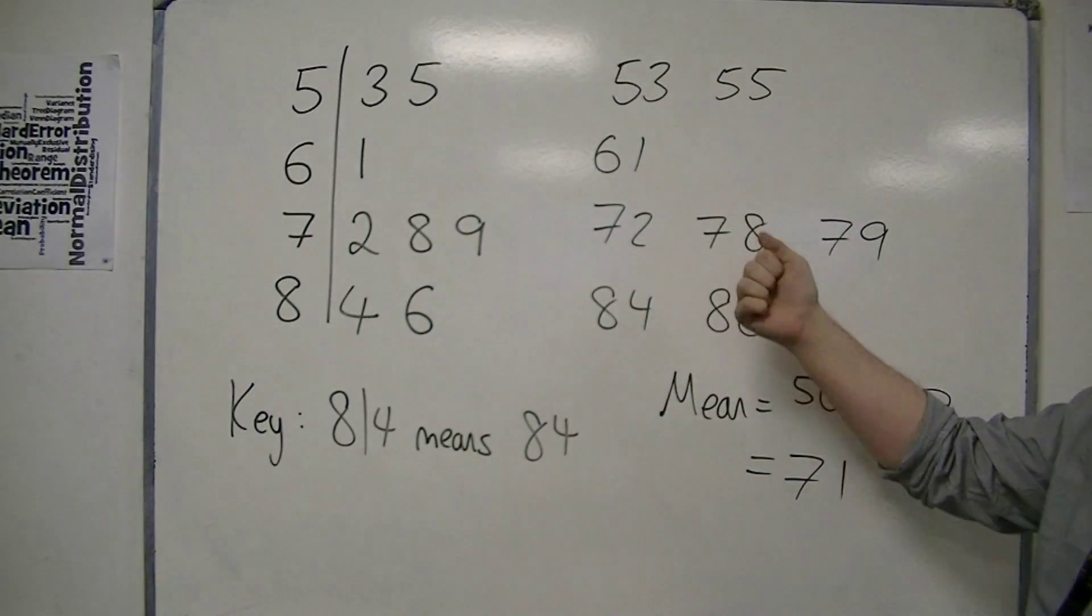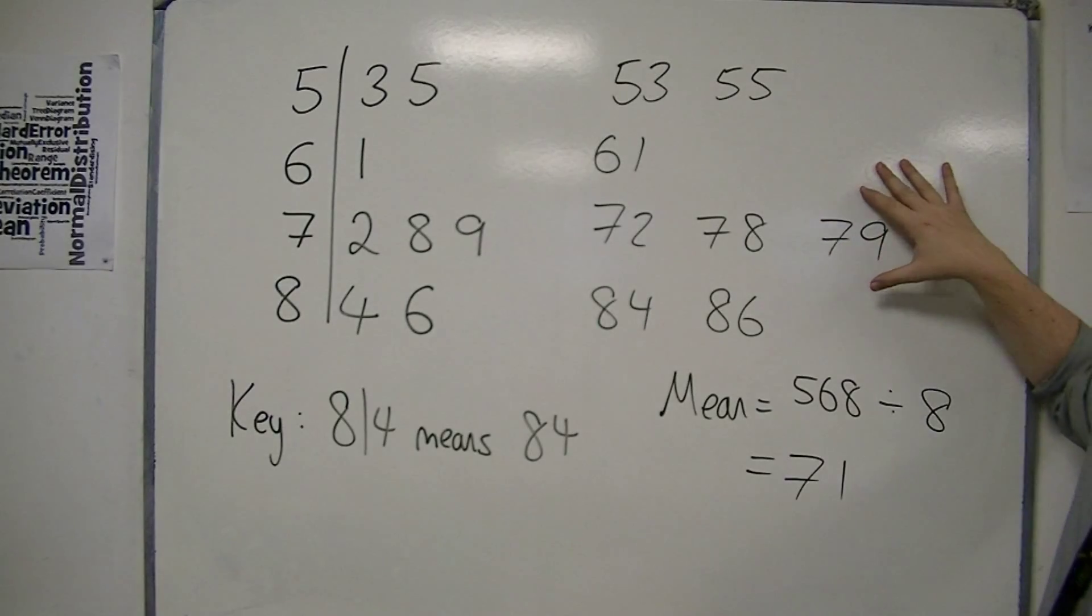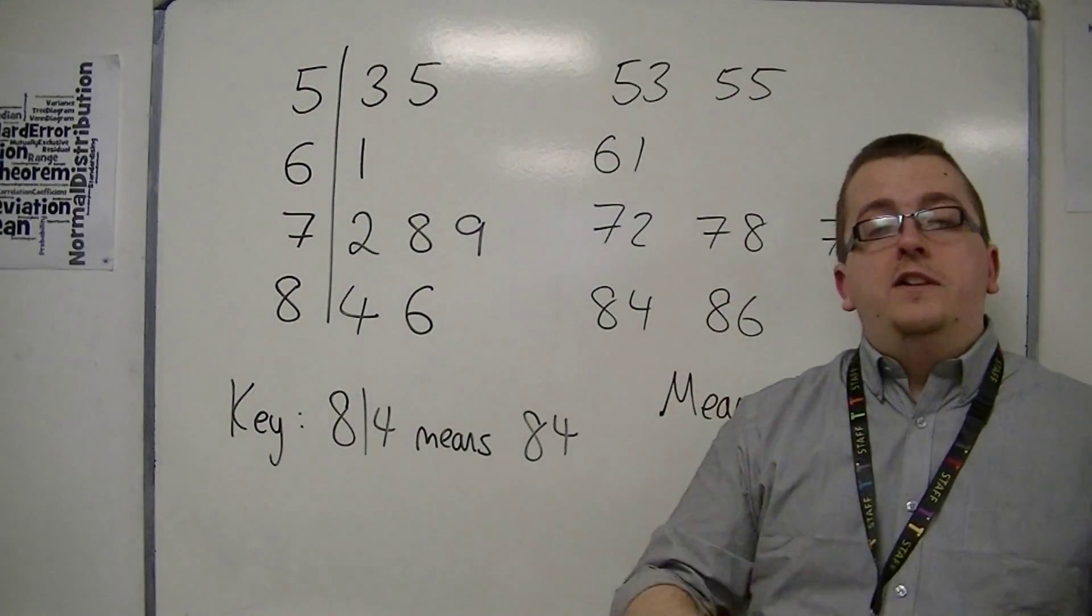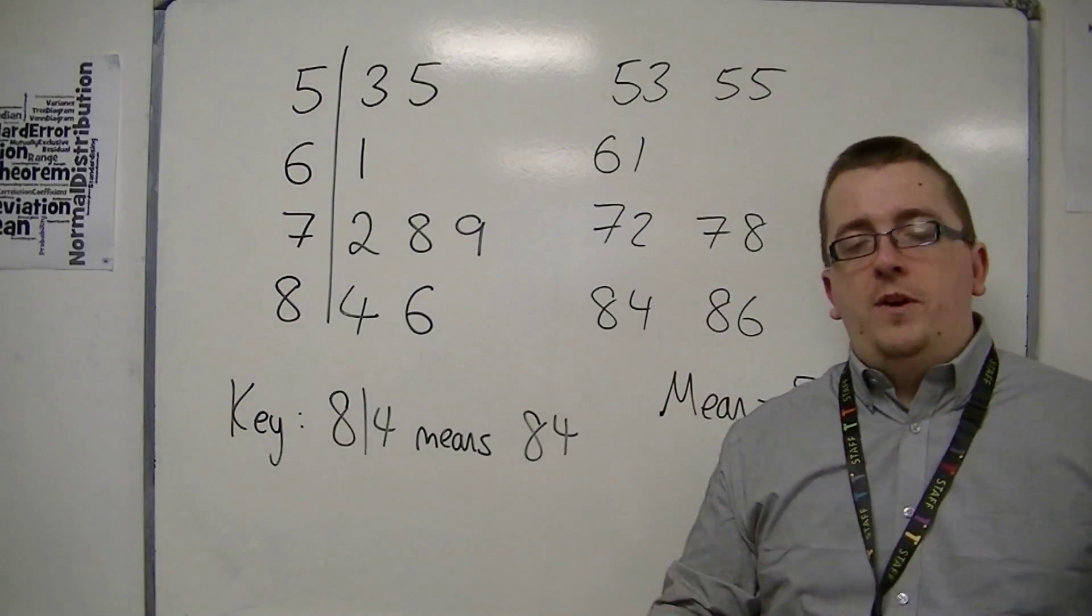You are kind of working backwards. You're having to pull the data out of the stem and leaf diagram in order to calculate the mean, to add them all up and divide by how many there are.